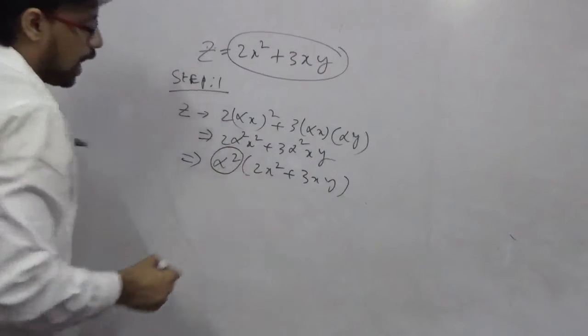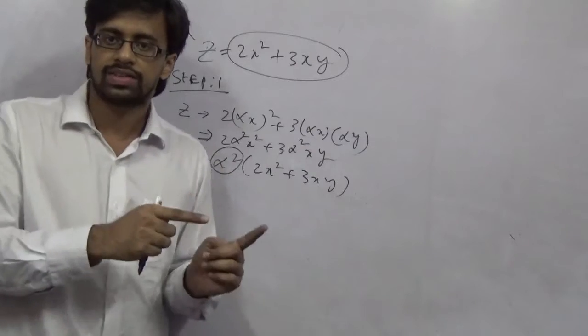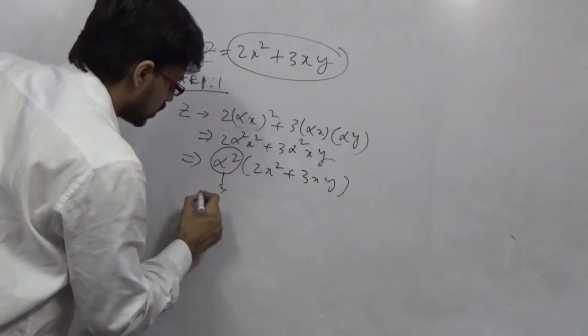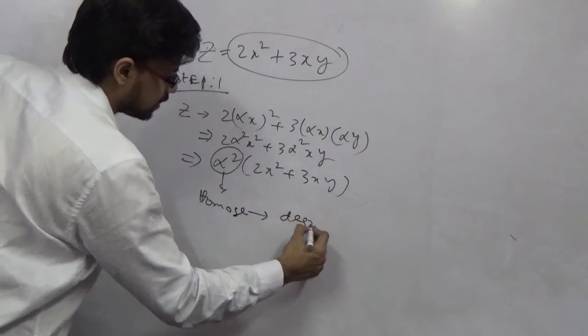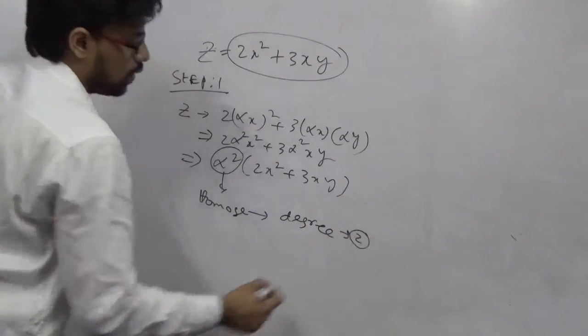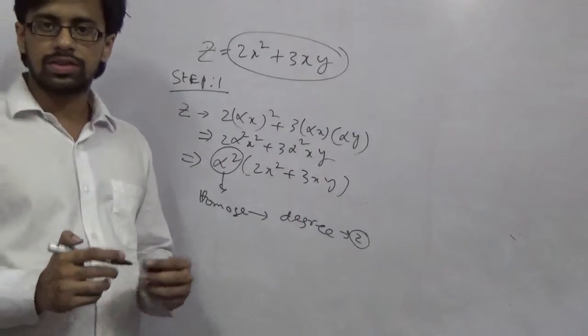So what is common now? Alpha has came out common, but as alpha square it has came out common. So it is homogeneous. But the degree is 2. How I managed to say 2? Because the power of alpha is 2. This is the simple process.